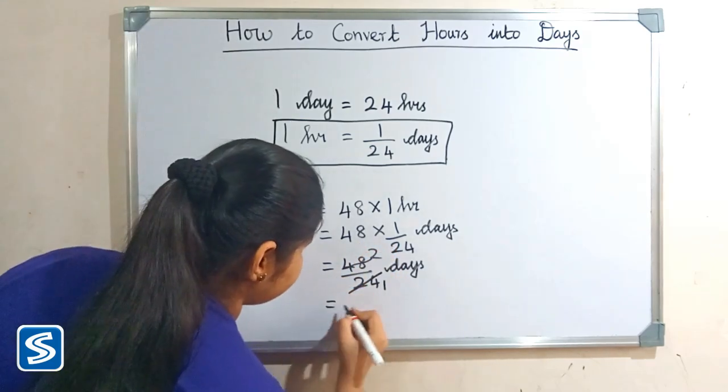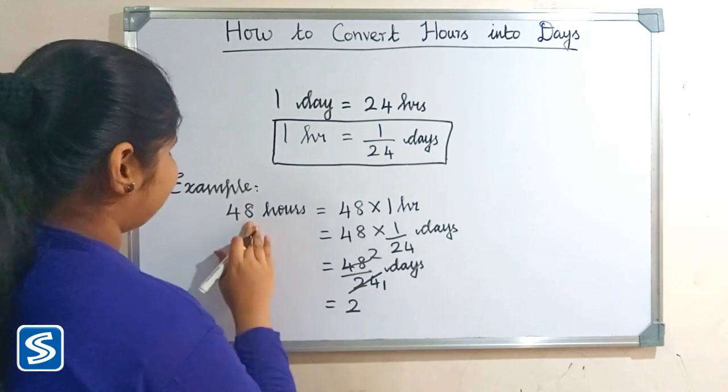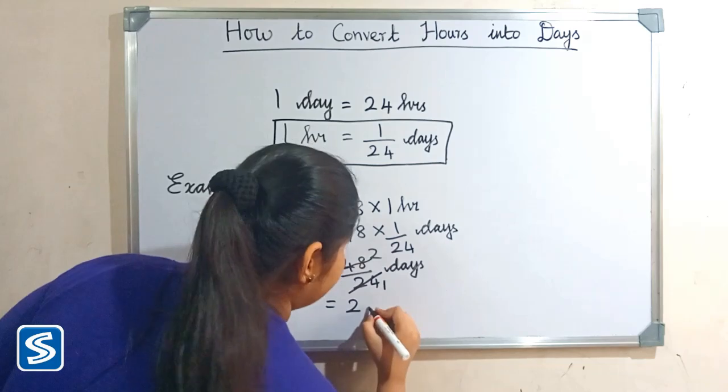So when we divide 48 by 24, our answer will be 2. So 48 hours is equal to 2 days.